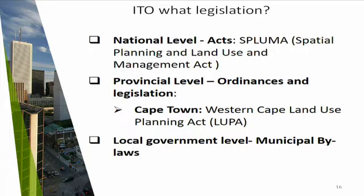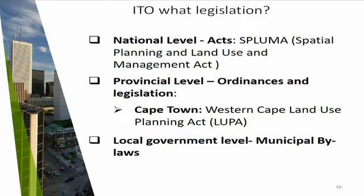Now that we know the definition, we're going to look at where the zoning comes from in terms of legislation. It's handled on three levels: national level, provincial level, and municipal or local government level. If we look at national level, we are looking at our SPLUMA Act — the Spatial Planning and Land Use Management Act. This is a brand new act that everybody has to take note of because it's national and regulates the whole country.